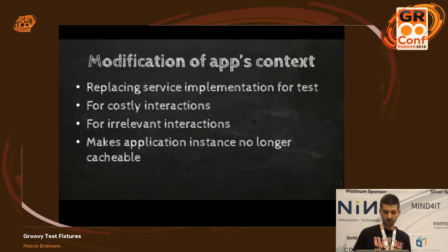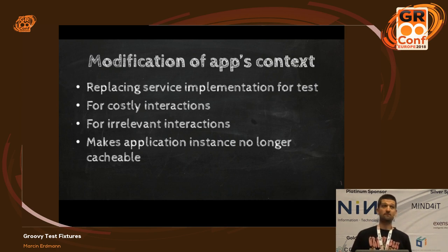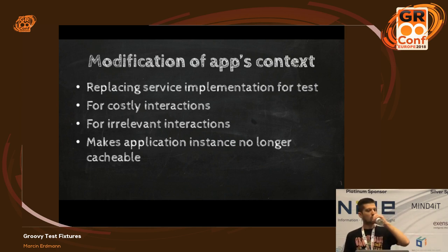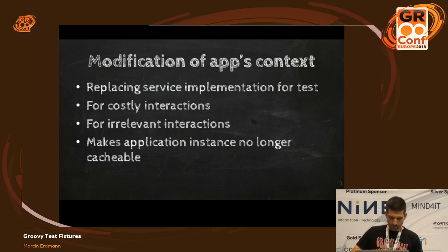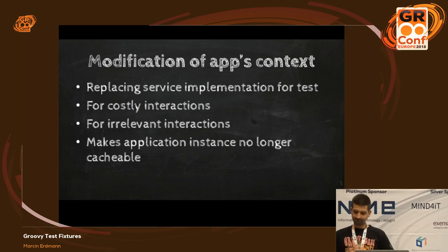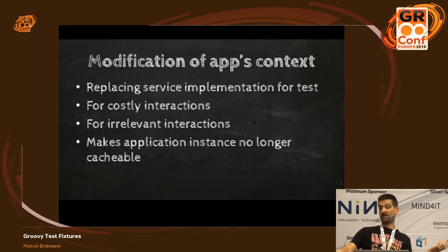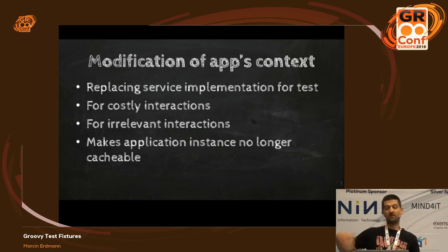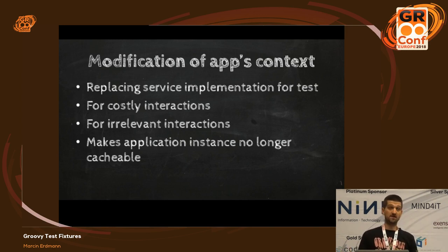Next thing you can do is change the context of your application under test to completely cut off certain interactions with your collaborators. Why would you want to do that? Several reasons — for example, you've verified that interaction in another test and don't want to test it at such a high level, or the setup of your collaborators is expensive and some of the code dealing with them is also expensive and you don't want to lose a lot of time.